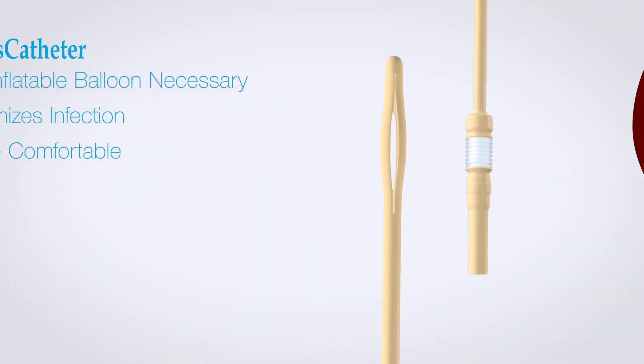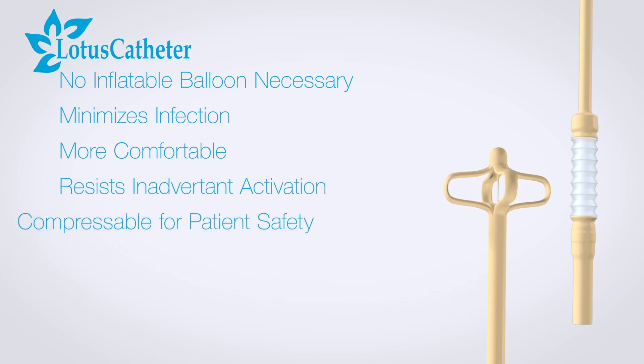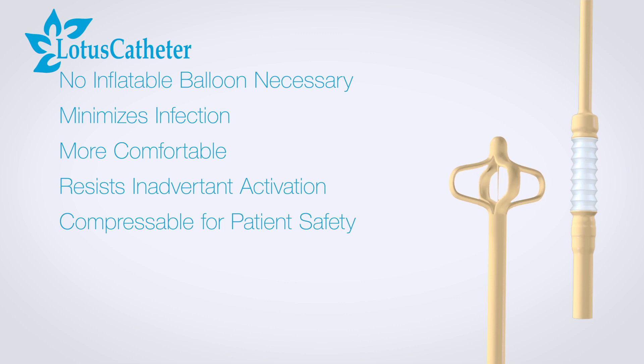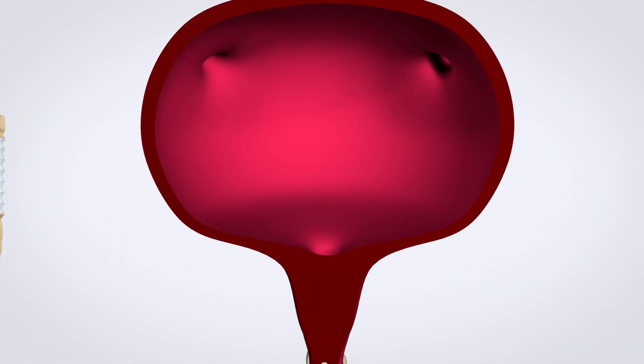The Lotus catheter's soft drainage lumen resist inadvertent activation inside the urethra. The retaining drainage lumen are compressible for patient safety and in the event of accidental dislodgement or misplacement, greatly minimize bladder and urethra trauma.